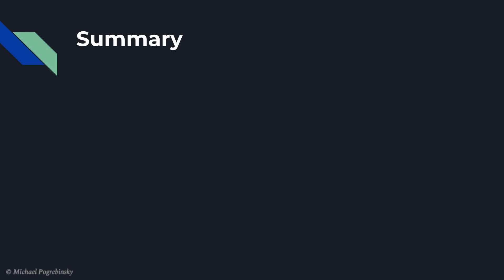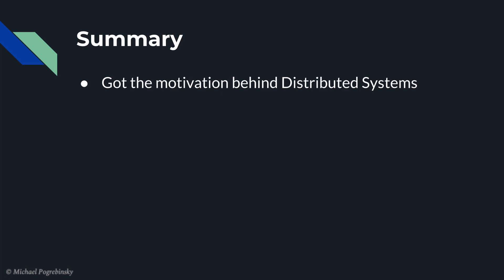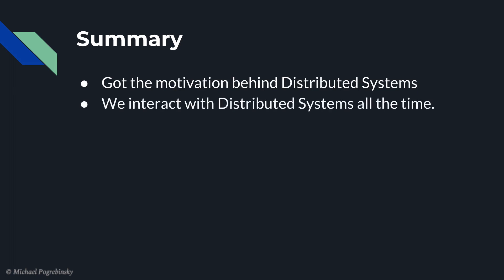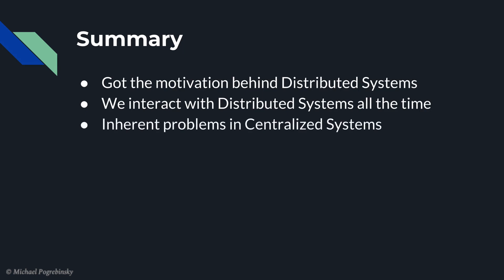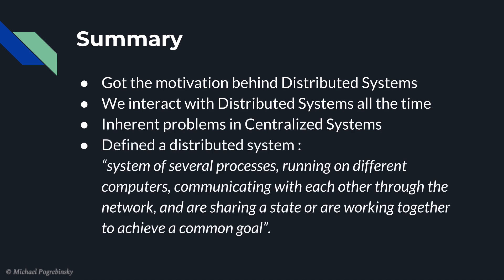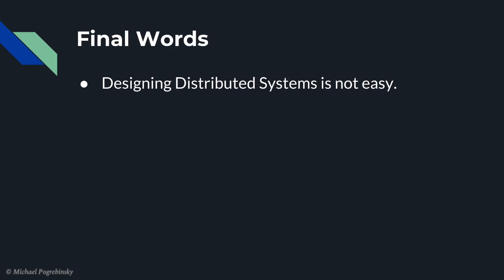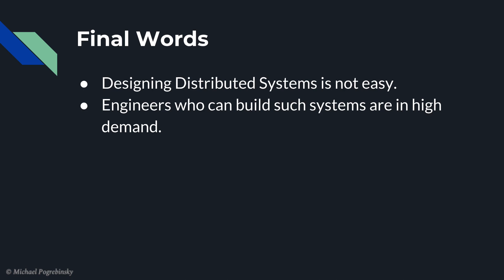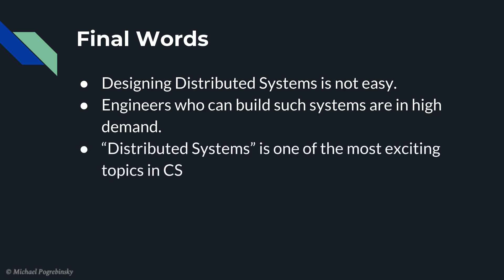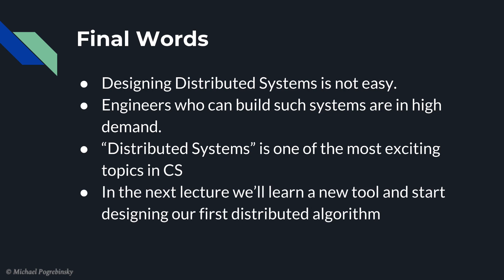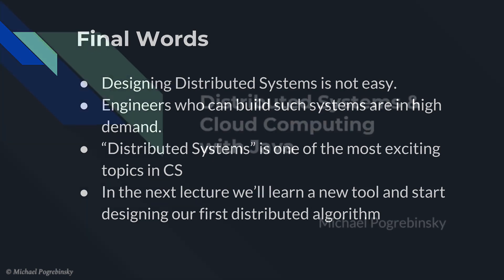So let's quickly summarize what we've learned in this lecture. First of all, we got the motivation behind distributed systems and realized that we interact with such systems every time we use digital services through the web. We learned about the inherent problems in centralized systems and the importance of designing our system to scale to multiple machines. We defined the distributed system as a system of several processes running on different computers, communicating with each other through the network, and sharing a state or working together towards a common goal. Designing distributed systems is not easy, and it's no coincidence that the biggest companies in the tech industry pay top salaries to engineers who can build and architect such scalable systems. But on the flip side, distributed systems is one of the most exciting topics in computer science. So in the next lecture, we will learn about the first tool to overcome those challenges and start designing our first distributed algorithm. See you in the next lecture.